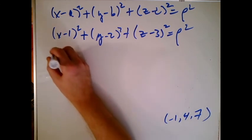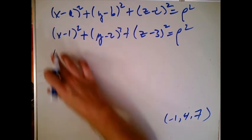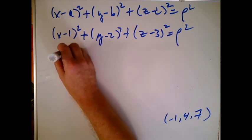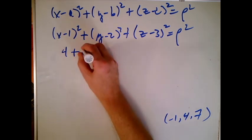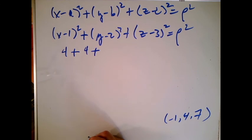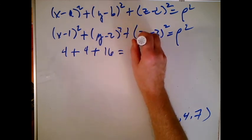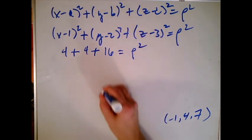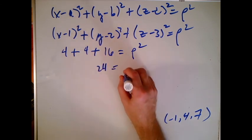So let's do that. When I put in minus 1 in for X, what I'm going to get here is 2 squared. That's 4. When I put in 4 for Y, I get minus 2 quantity squared. So that's also a 4. When I put in 7 for Z, I get 7 minus 4. That's going to be 16. And so I get 16. 4 plus 4 plus 16 equals rho squared. So 24 equals rho squared.